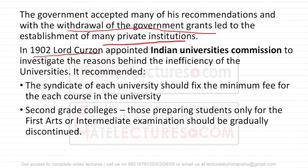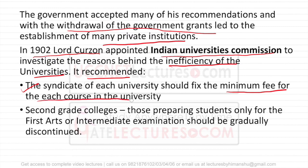In 1902, Lord Curzon appointed the Indian Universities Commission, basically because he was not satisfied with the workings of universities and wanted to improve their efficiency. This commission recommended that the syndicate of each university should fix minimum fees for each course — fees should be fixed and not variable. It also recommended that second-grade colleges, which only prepare students for fine arts or intermediate examinations, should be discontinued.